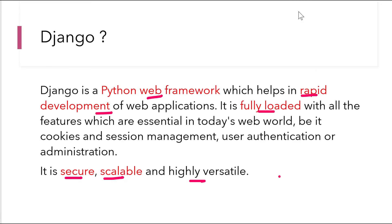The next keyword is rapid development of web applications. Django helps in rapid development because this framework is easy to grasp — all the common built-in functionalities are there and it's very easy to develop your first application. Thus the learning is quite fast when you go with Django. The third keyword is that it is fully loaded with all the features. In today's web world there is a lot of requirement from a web framework: cookies and session management, user authentication, administration of the website. There are plenty of libraries available for common web development tasks, and that's why we say that it is fully loaded.